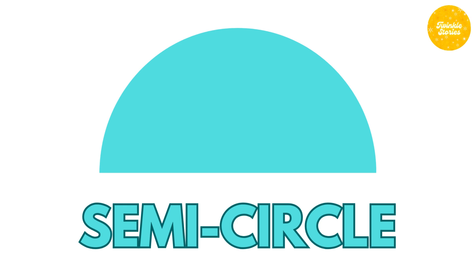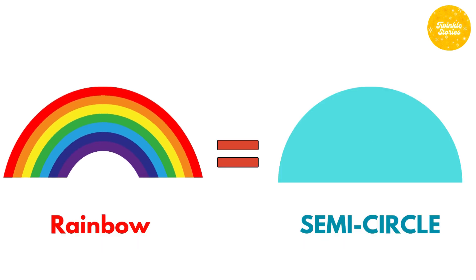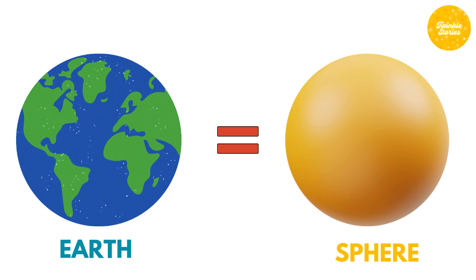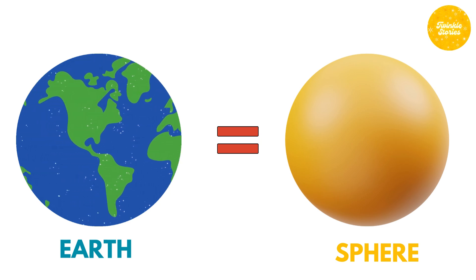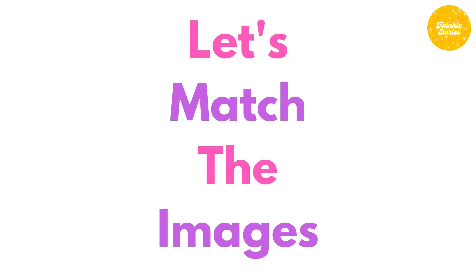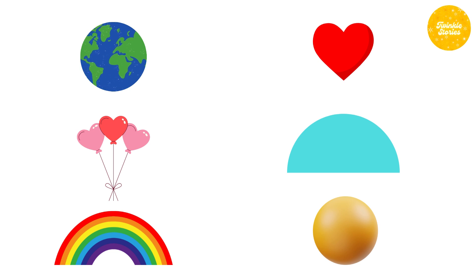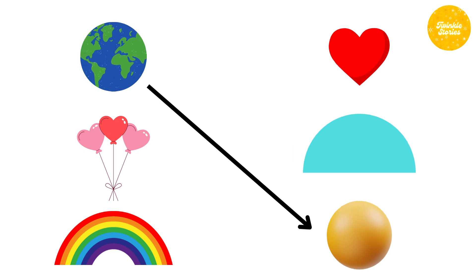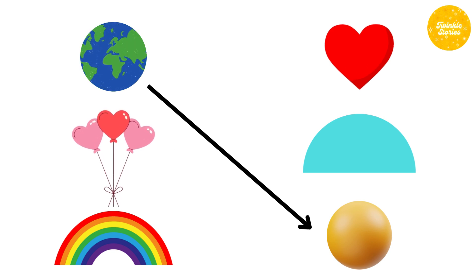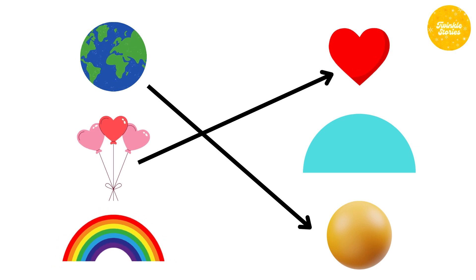Semicircle — rainbow is the example of semicircle. Sphere — earth is the example of sphere. Heart — balloons are the example of heart. Now let's match the images! Earth is the example for sphere, balloons are the example for heart, rainbow is the example for semicircle.